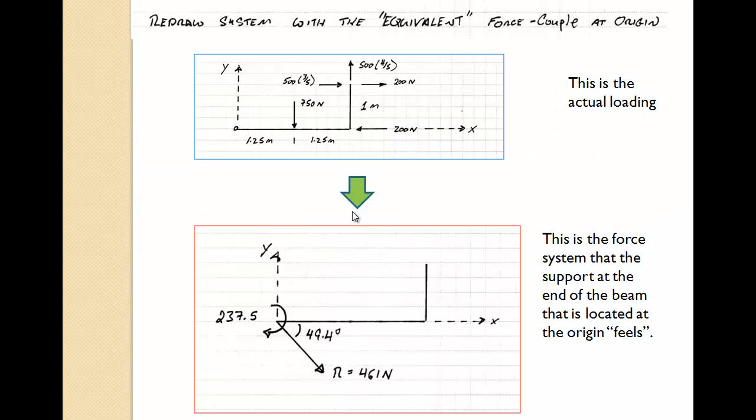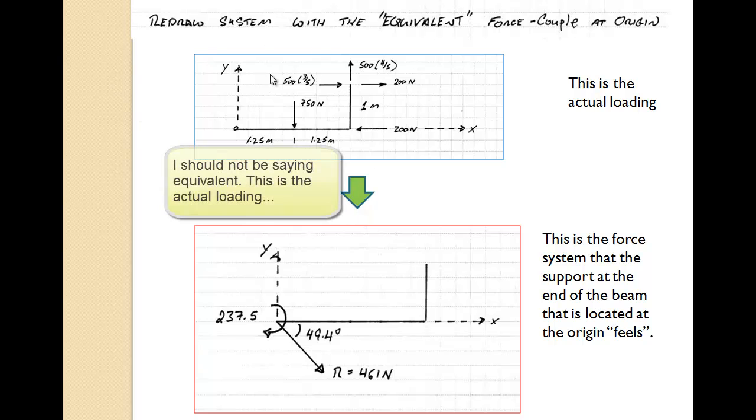And what we have now is the answer where we've taken this equivalent force couple, or this equivalent loading of the original system, and we've now changed it into a resultant force of 461 newtons acting below the x axis, or clockwise from the x axis at 49.4 degrees. And we have a couple, or a moment, of 237.5 newton meters. And I'm drawing it here with the arrow being a clockwise arrow. So it's somewhat easier to interpret on the diagram. And this force system is what the support at point O is going to see or feel. And that concludes this problem. Thank you.